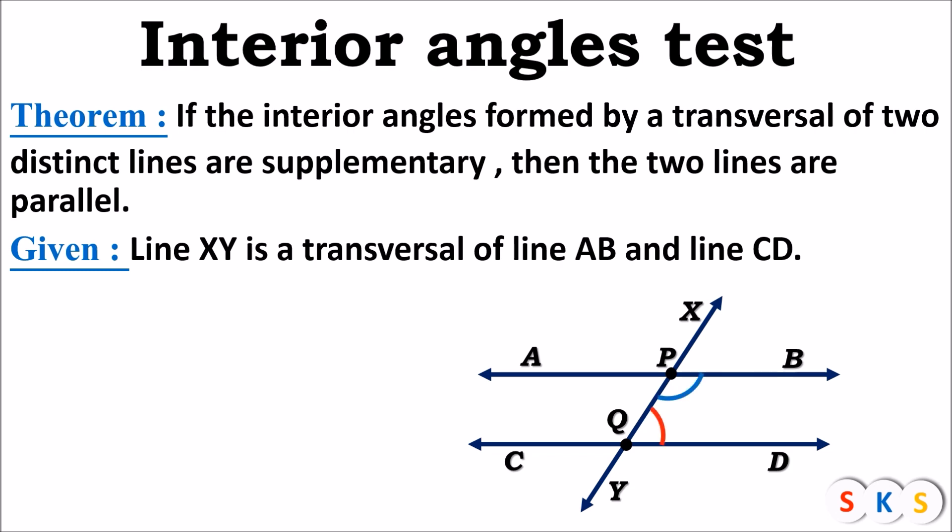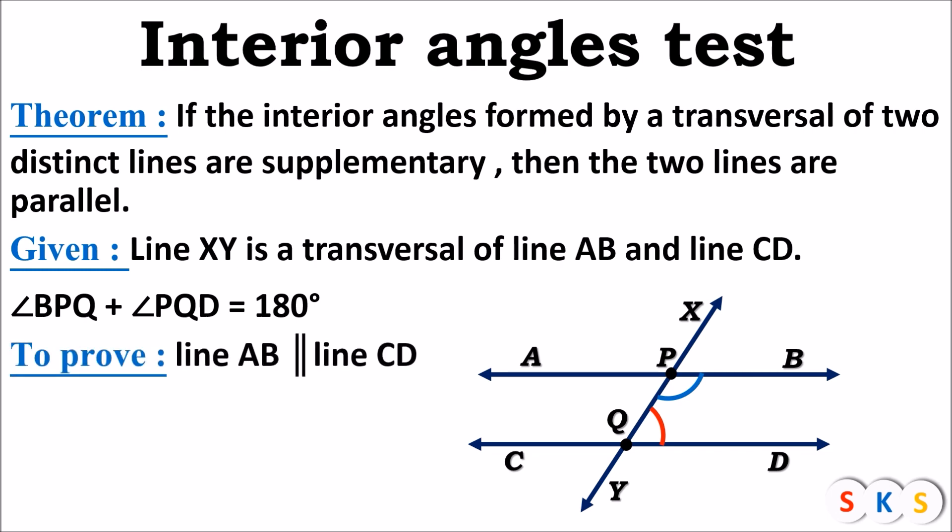In this figure, angle BPQ and angle PQD form one pair of interior angles. It is given that the sum of these two angles is 180 degrees. So in the given part: angle BPQ + angle PQD = 180°. To prove: line AB is parallel to line CD.